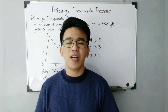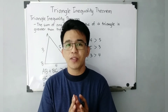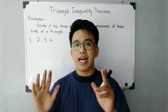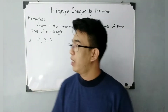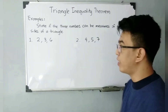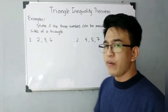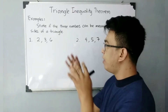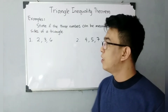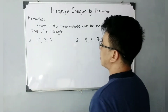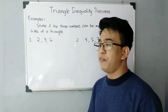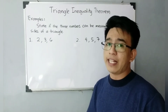To help you understand this better, I will give you some problems where we apply the Triangle Inequality Theorem. Let us solve some problems wherein we will apply the triangle inequality theorem. We have this: state if the three numbers can be measures of three sides of a triangle. We will test if these measurements can form a triangle. We have the measurements 2, 3, and 6. The theorem says the sum of the two sides of any triangle is always greater than the third side.